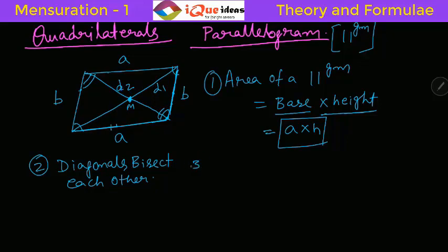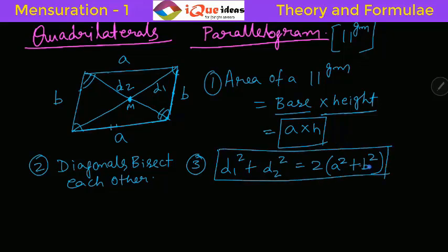Now the third important thing is the relation between the diagonals and the sides. You can directly memorize it: D1 square plus D2 square is equal to 2 times A square plus B square. It is a very important relation between the diagonals and sides. That is, sum of squares of diagonals is equal to 2 times the sum of squares of sides. You can directly memorize this as a direct formula for Parallelograms.